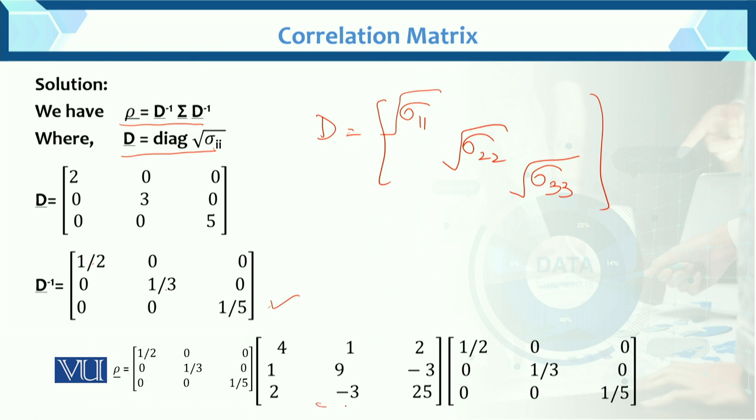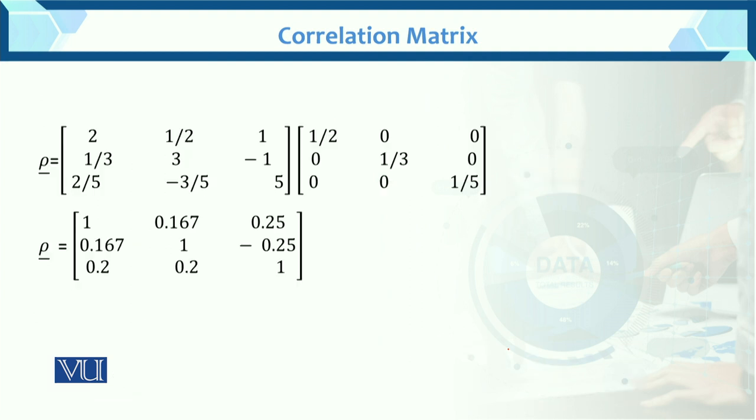Diagonal sigma D inverse. Now further, we need to solve this 3 by 3 matrix. Now second column, third row, third column, first row, third column, first row, third row, second row, third row. You have three by three matrix.